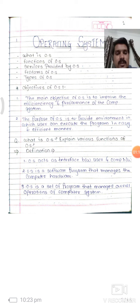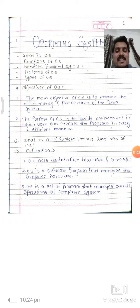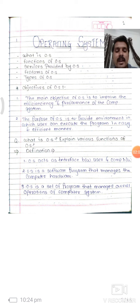Next is the definition of the OS. This is a very important definition. Operating system acts as an interface between the user and computer hardware. Second definition: operating system is a software program that manages the computer hardware. A larger definition: operating system is a set of programs that manages the overall operations of the computer system.